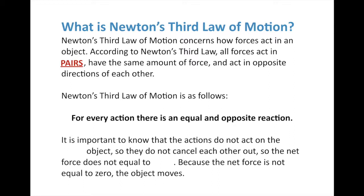There is an important point you need to know about Newton's third law. The actions actually don't act on the same object, so they don't cancel each other out. When we talked about Newton's second law, if the net force equals zero, the object isn't moving. So they can't act on the same object because if they did, they would cancel each other out and there would be no motion. Since the net force doesn't equal zero, the object is able to move.